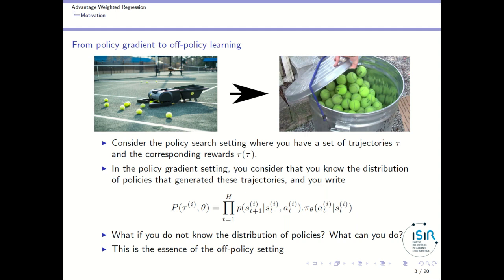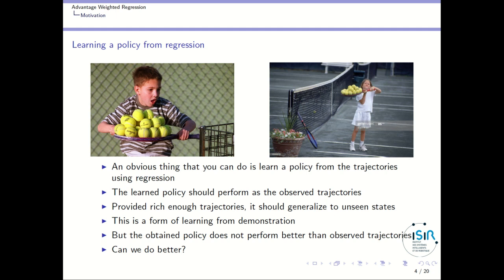In that case, what can you do? Answering this question is the essence of the off-policy setting. You will have a replay buffer full of trajectories and you want to learn something given that you don't know what was the policy that helped generating those trajectories. Of course, quite obviously, you can learn a policy from regression, so this agent would be imitating exactly the observed one.